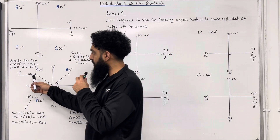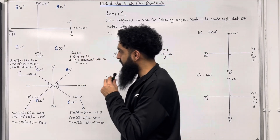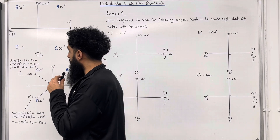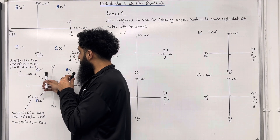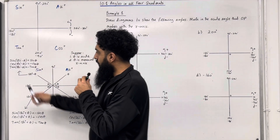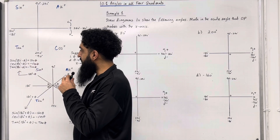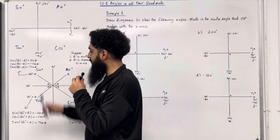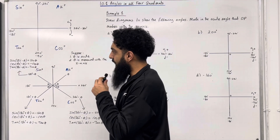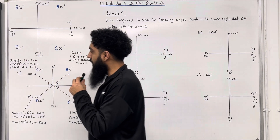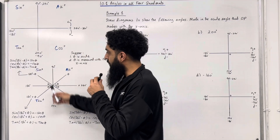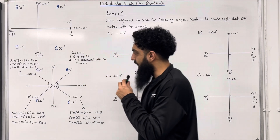For the section 180 minus theta: sine of (180 minus theta) is positive sine theta, because in this quadrant sine is positive. Cosine of (180 minus theta) is minus cos theta, because in this quadrant cosine is negative. And tan of (180 minus theta) is minus tan theta, because in this quadrant tan is negative.